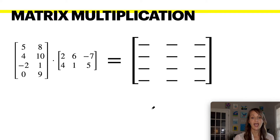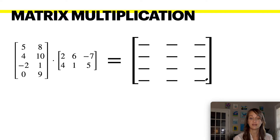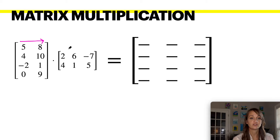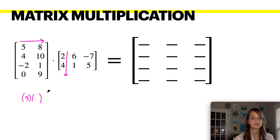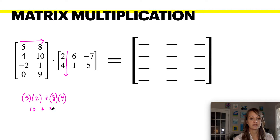These two matrices are a four by two and a two by three, so we know the result is going to be a four by three matrix. To find the first entry, you multiply the first row by the first column — each entry. So you multiply five times two and add that to eight times four. Five times two is ten, eight times four is thirty-two, so the answer to this entry is forty-two.